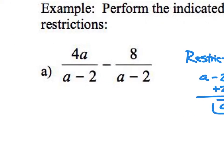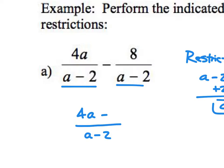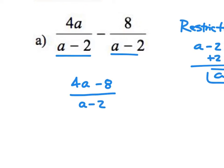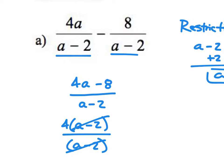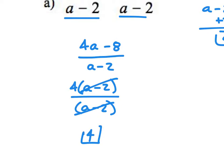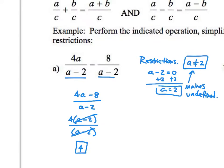Now I want to subtract these fractions. We have a common denominator, so I rewrite this as one fraction over a minus two, and subtract the numerators: 4a minus eight. I can't combine those, but I can factor a four out of the numerator, leaving me with four times the quantity a minus two, all over a minus two. Those divide out to one, and the answer is simply 4.